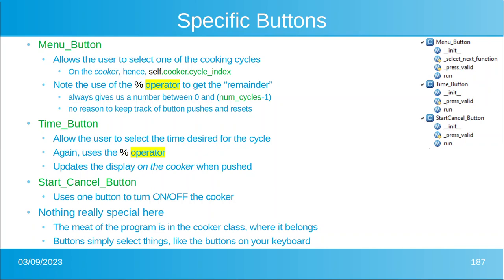So let's talk about the specific buttons. There's not much to talk about because, as we mentioned, it's really a lot like the buttons on your keyboard. The menu button allows the user to select one of the cooking cycles, so it uses self.cooker.cycle_index because the cooking cycles are on the cooker, not on the button. Note the use of the percent operator — it gives you the remainder of an integer division, so we don't have to keep track of button pushes and reset it every time we hit six or whatever.